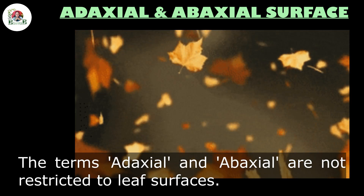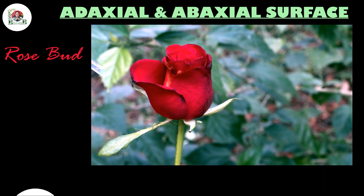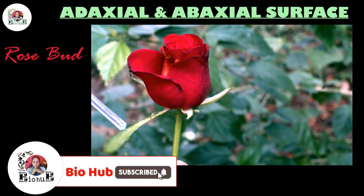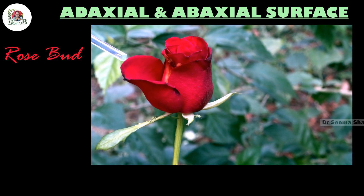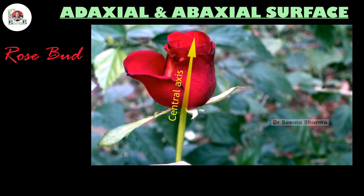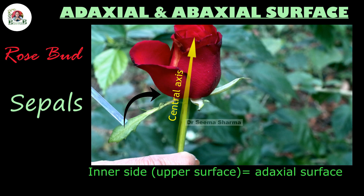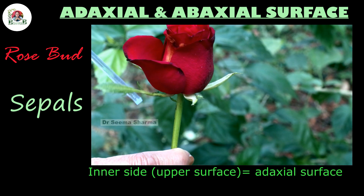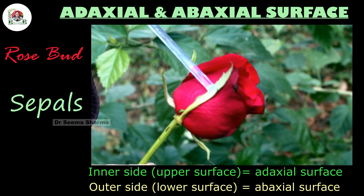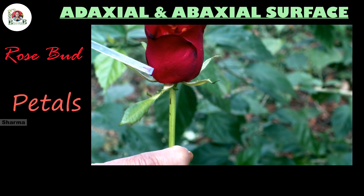Interestingly, these terms are not restricted to leaves — even floral whorls have adaxial and abaxial surfaces. Look at this rosebud: it has typically green-colored sepals and vibrant deep maroon-colored petals. Identify the central axis of this part. Look at its sepals — the inner part of these sepals, which is towards the central axis of the flower, is the adaxial surface of the sepals.